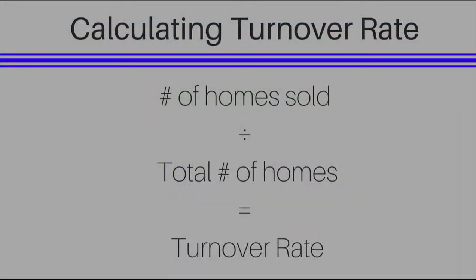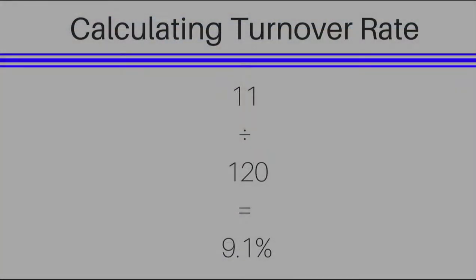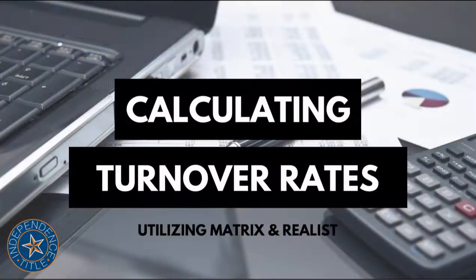Now we take our results and plug them into our formula. I have 11 total homes sold, divided by the 120 units in the complex, and my turnover rate comes out to be 9.1%. And there you have it — you're on your way to being an expert at educating your clients on neighborhood turnover rates. Thanks for tuning in, we'll see you next time.